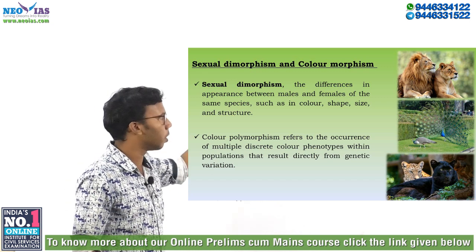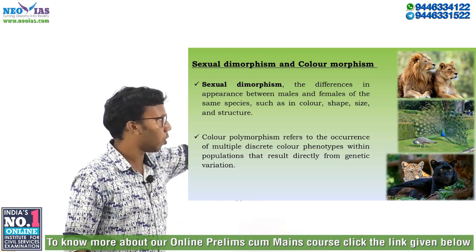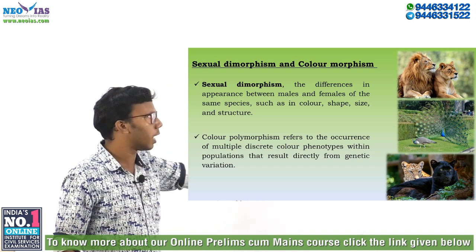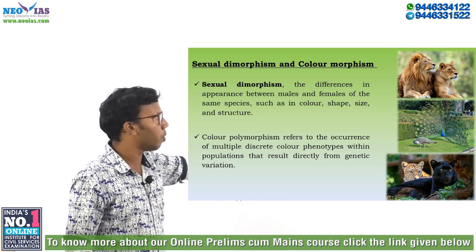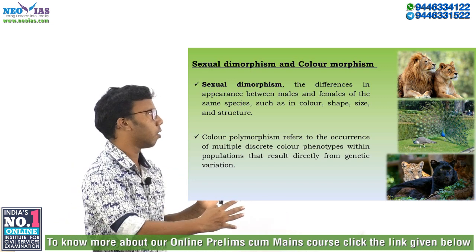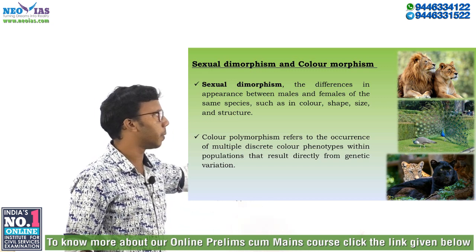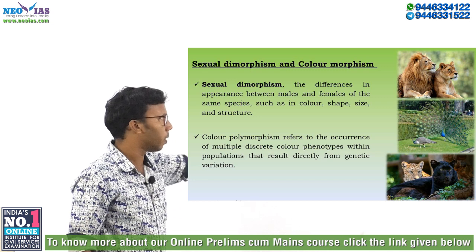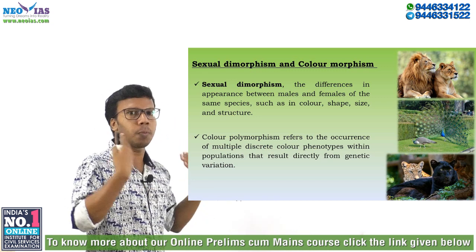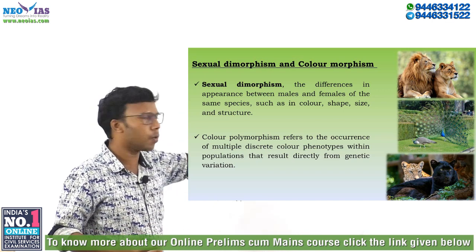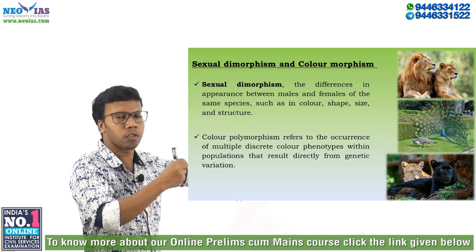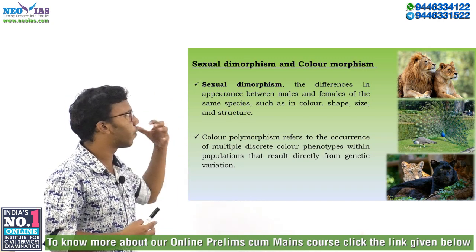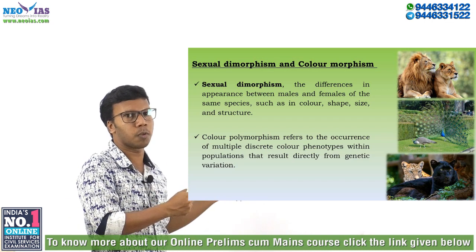Now we can see another picture of peafowls. The male peafowl is called a peacock and the female is called a peahen. The peacock has a tail called a train — beautiful feathers. The peahen does not have that beautiful train, so the male peafowl is much more beautiful than the female. That is also an example of sexual dimorphism.